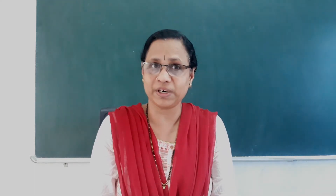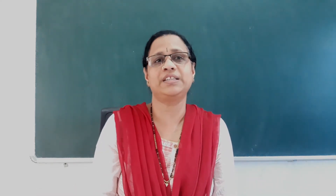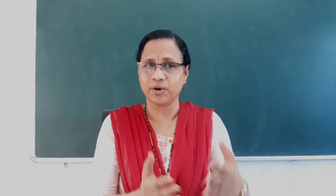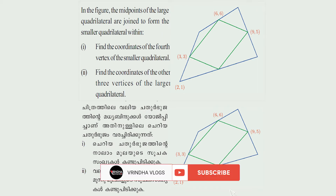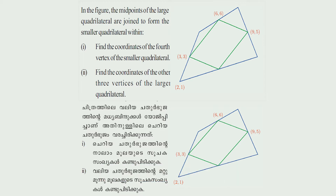We have discussed these three questions. Next question: In the figure, the midpoints of the large quadrilateral are joined to form the smaller quadrilateral within.